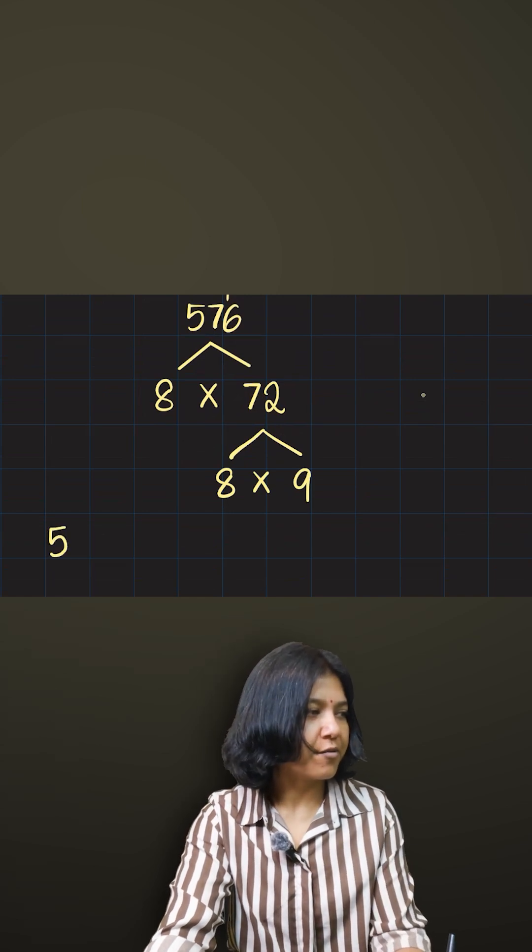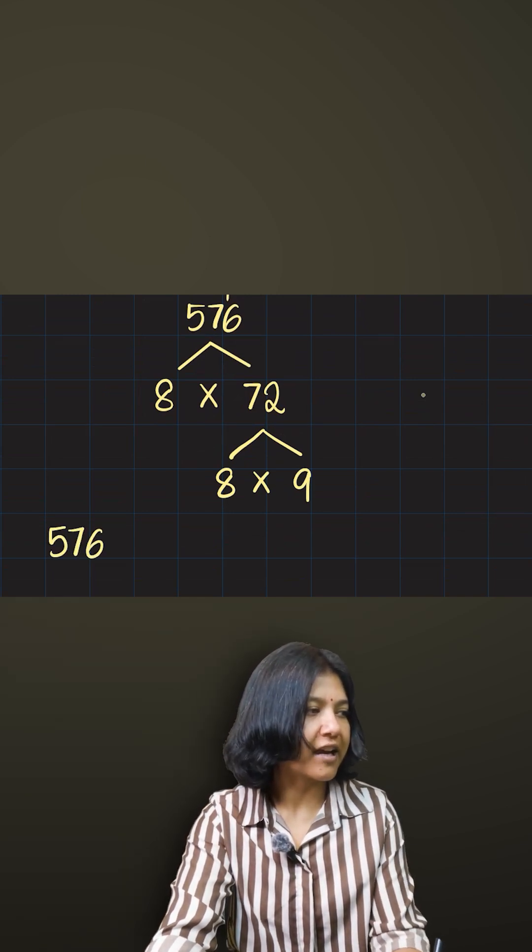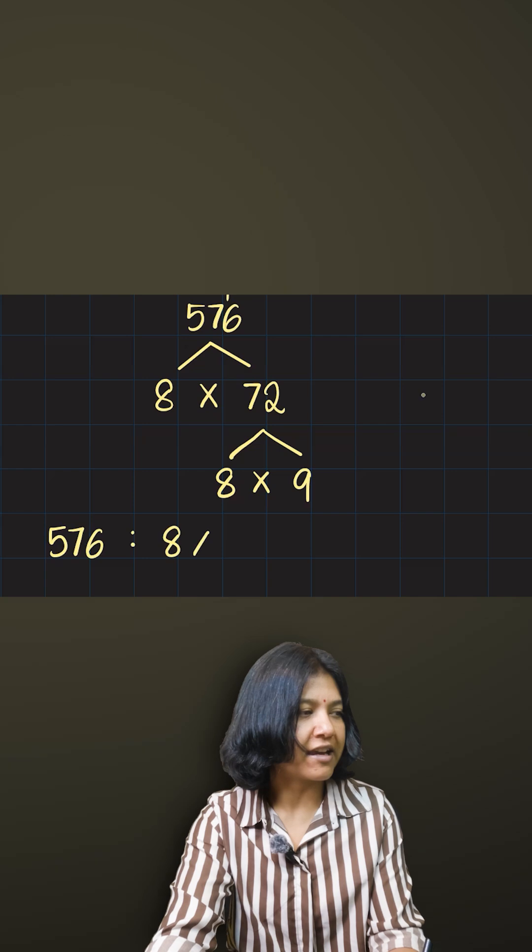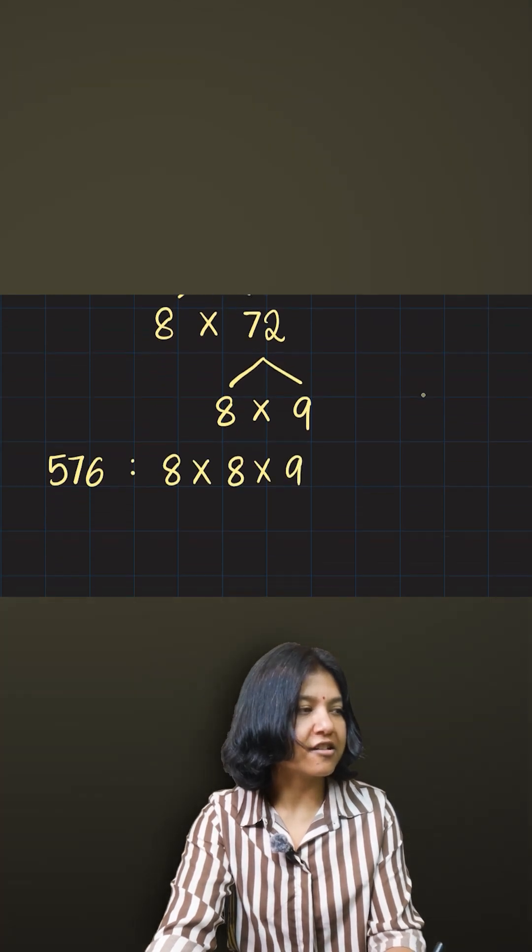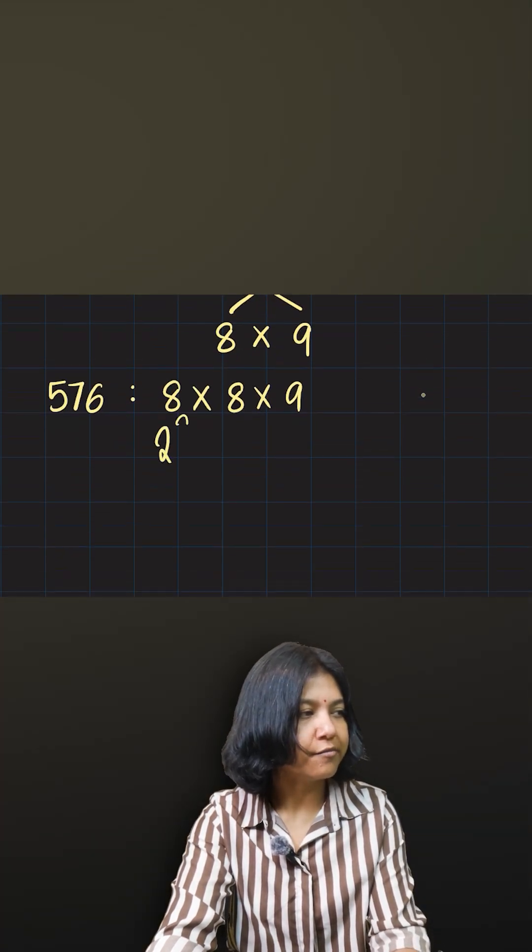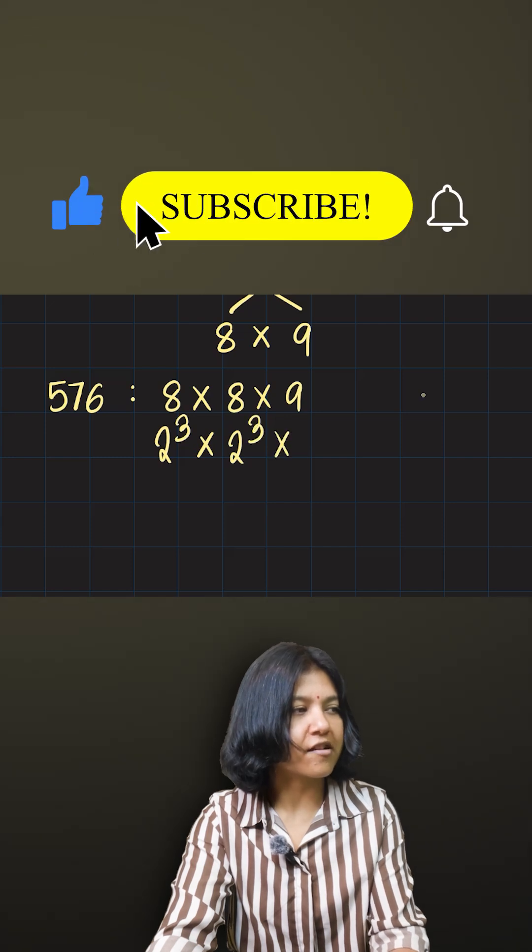This 8 here is a cube of 2, so 2³. 8 again is a cube of 2, while 9 is just a square number, the square of 3.